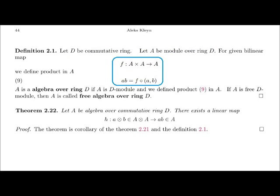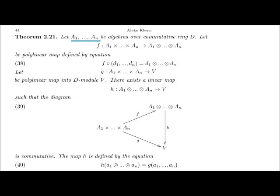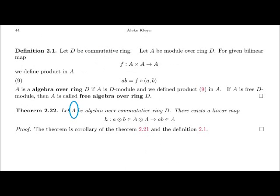I will remind you that the module A is a T-algebra if there is defined in module A a product as a bilinear map. Therefore, from definition 2.1 and theorem 2.21, it follows that if A is an algebra over commutative ring D, then there exists a linear map H which maps the tensor product A ⊗ B into the product AB in the algebra A. In this lecture we defined the tensor product of algebras over commutative ring D. According to the definition, the tensor product of algebras is a module over ring D. In the next lecture we will see that we can define the structure of an algebra in this module.